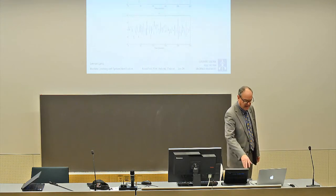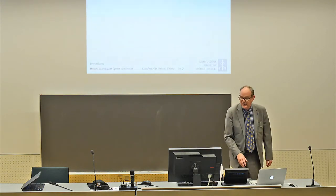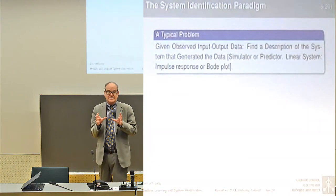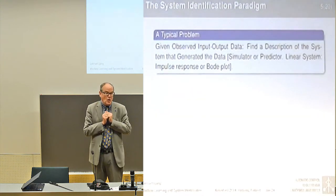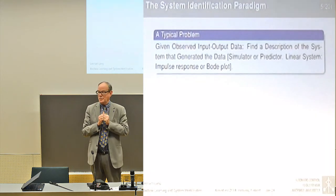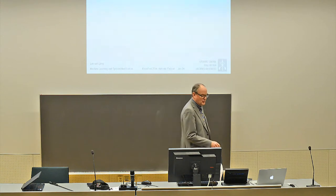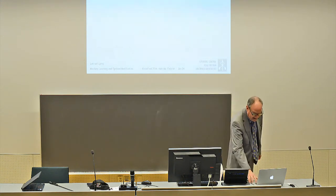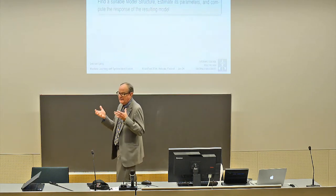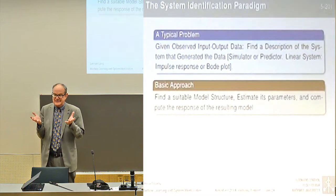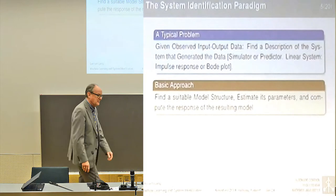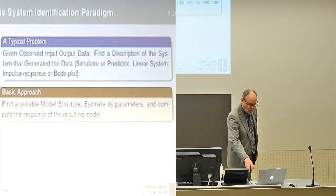The system identification paradigm has two basic steps. You try to find a system, a description of a system that generates the data you observe. For a linear system, we have to find the impulse response or a state space model of the system. And to do that, we have a hypothesis about the structure, the model structure within which you think you can find a good description of the system. Use a parameterized model, estimate the parameters to find the model, and then evaluate what you get.